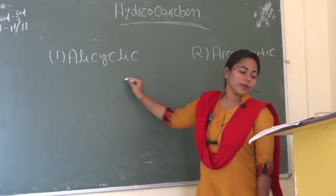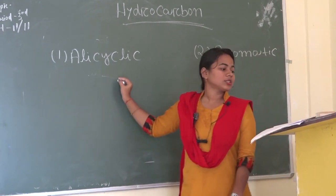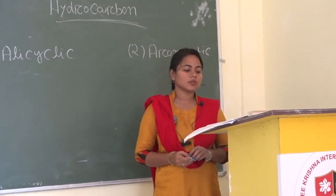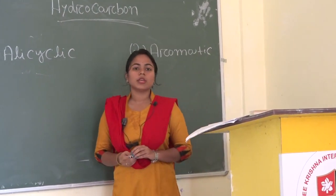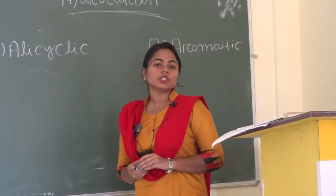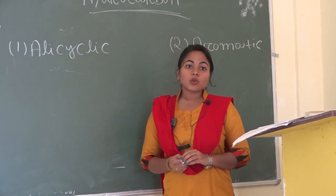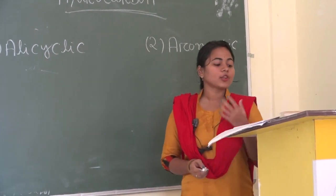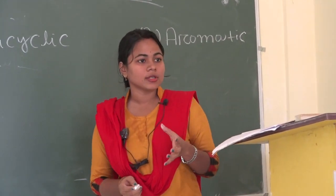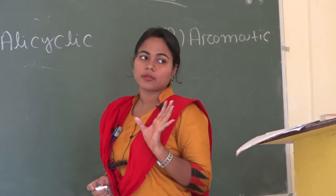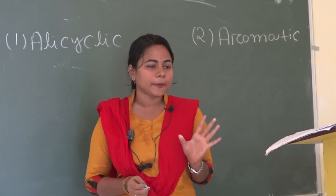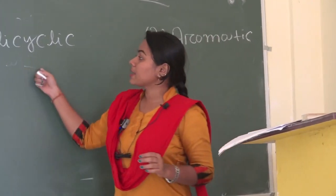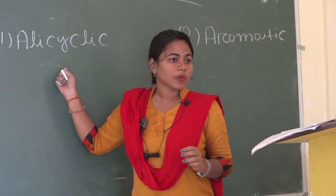What do you mean by alicyclic structure? It is a closed structure. Examples: cyclohexane, cyclopentane, cyclobutane, cycloheptane — these are all called alicyclic structures. In this structure, carbon has five or six members.